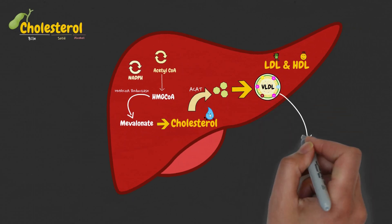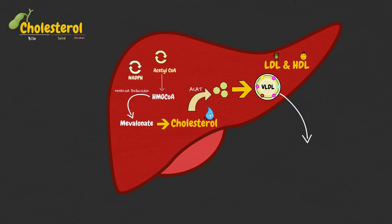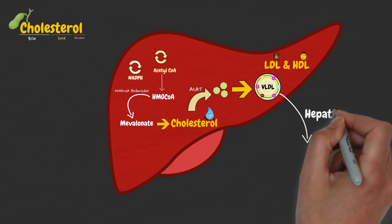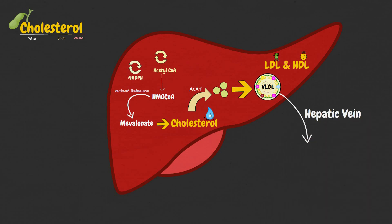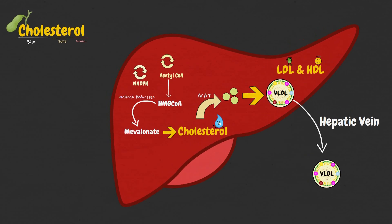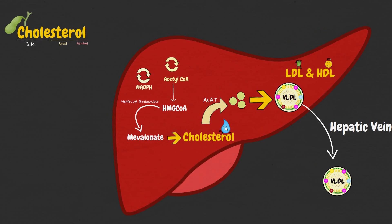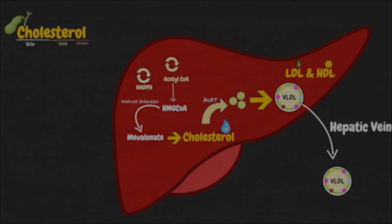Coming back to VLDLs: these nascent VLDLs containing cholesterol, cholesterol ester, and triglycerides leave the liver via the hepatic vein and progress to the periphery, where they are converted to other types so that tissues are able to use them for different purposes. We hope this answered your question on how cholesterol is transported from the liver to the peripheral tissues.